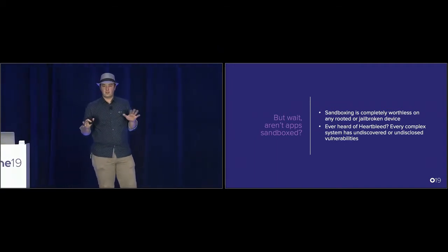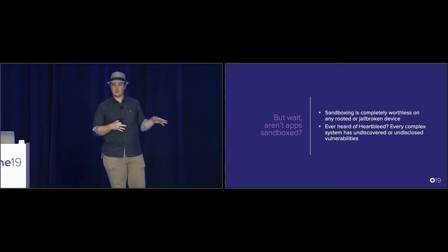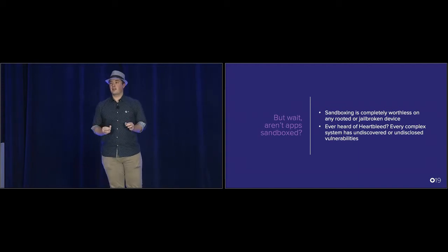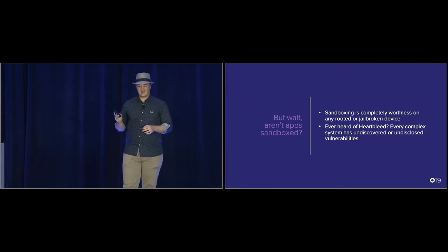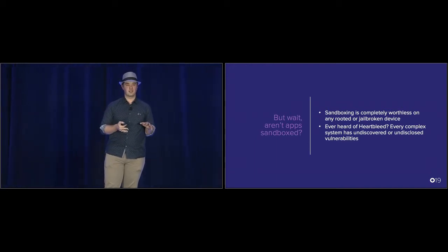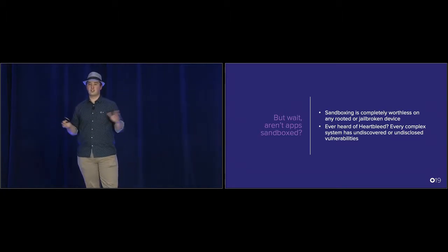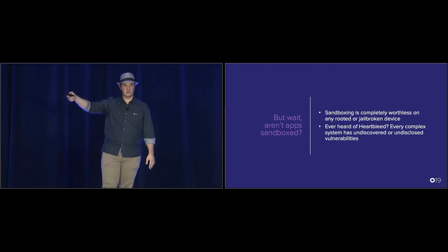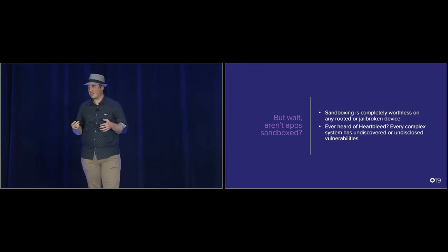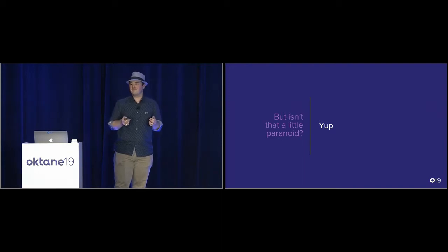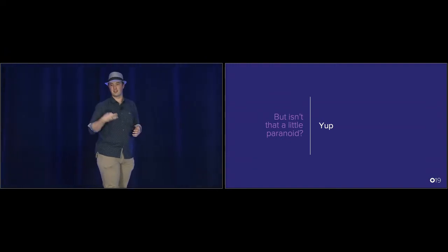Have you ever heard of Heartbleed? SSL itself broke because of this really subtle race-condition-type thing in the code. OSes are extremely complicated, and there are always undiscovered bugs and undiscovered issues. No matter how hard you try, some clever attacker is going to find something. You shouldn't trust the OS to maintain its sandboxing — there are probably at least a dozen undisclosed vulnerabilities right now that we don't know about. We know the NSA has a couple, and that Israeli research firm that helped the FBI with the San Bernardino incident still has one we don't know about to this day. You can't really trust app sandboxing. Being paranoid is our job — if you're developing in a security manner, paranoia is your baseline.